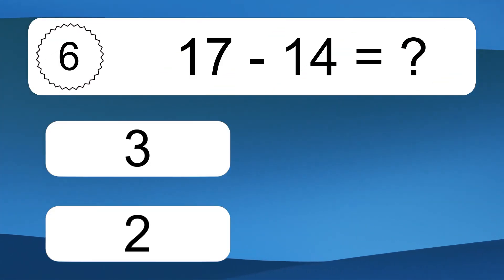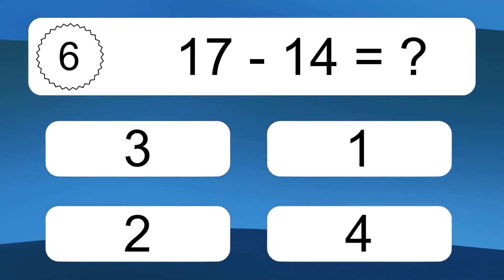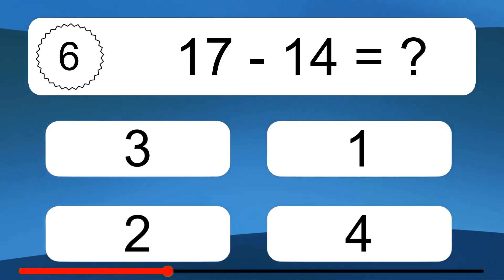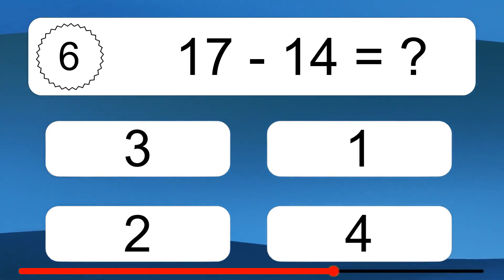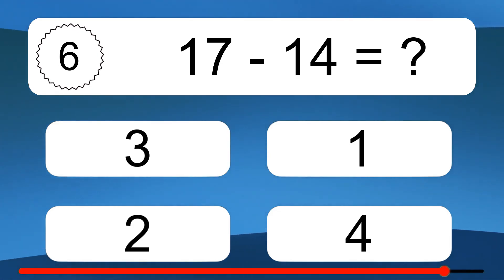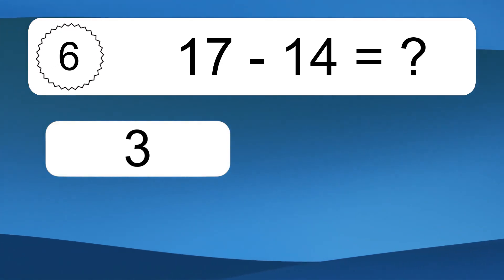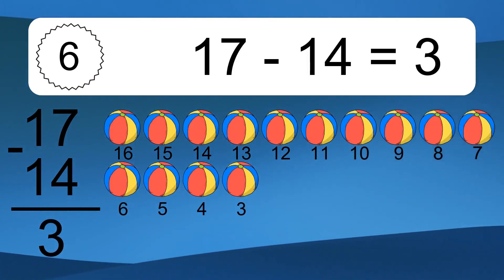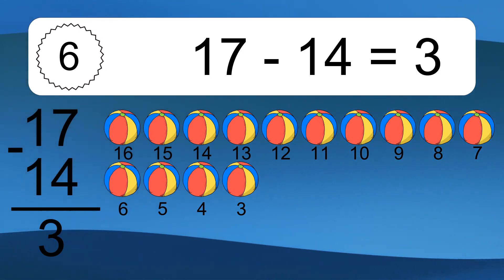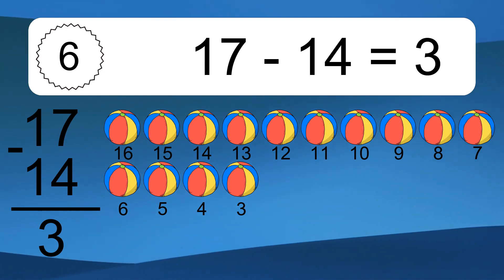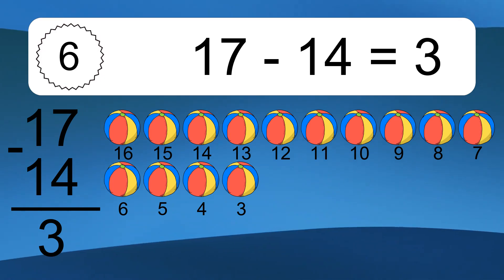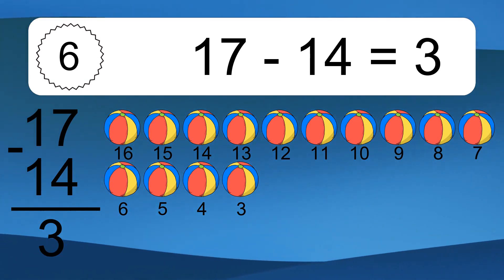17 minus 14 equals what? 17 minus 14 equals 3. Let's count it. 16, 15, 14, 13, 12, 11, 10, 9, 8, 7, 6, 5, 4, 3.